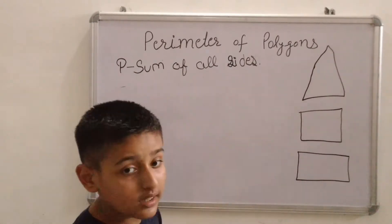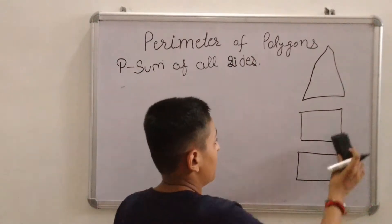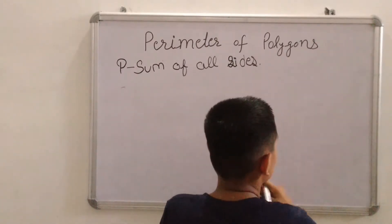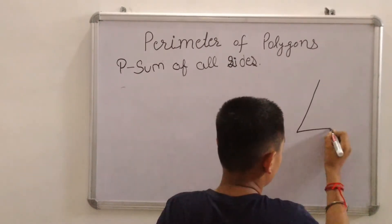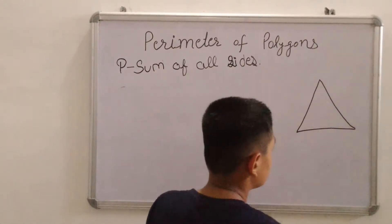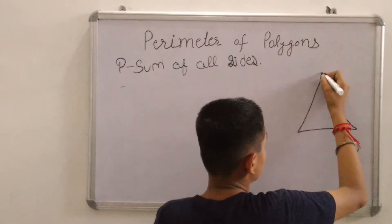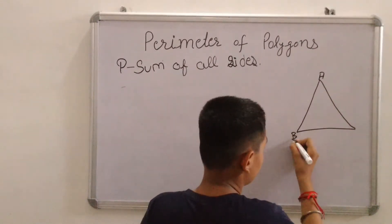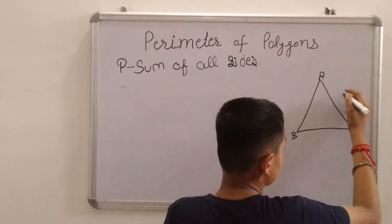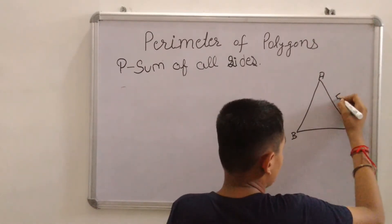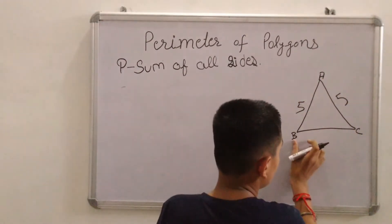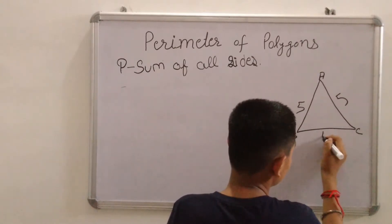First we take the perimeter of a triangle. This is our triangle. This is point A, this is point B, and this is point C. The length of AC is 5 cm, the length of AB is 5 cm, and the length of BC is 4 cm.